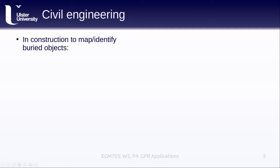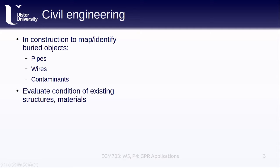A common thread we've seen with GPR applications is their use to map or identify buried objects, and the same is true for construction projects where GPR is used to map things like pipes, wires and cables, and buried contaminants. An increasingly common commercial application of GPR is to evaluate the condition of existing structures or materials — for example, cracks in concrete or cement, or corrosion of rebar reinforcements used in concrete structures.